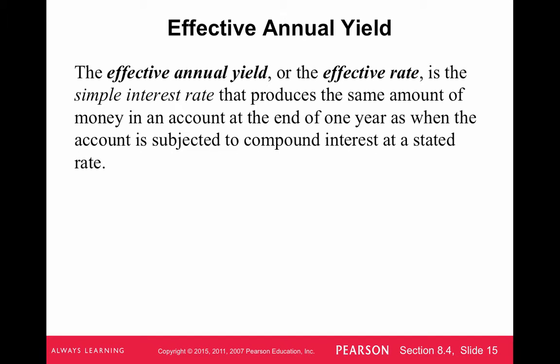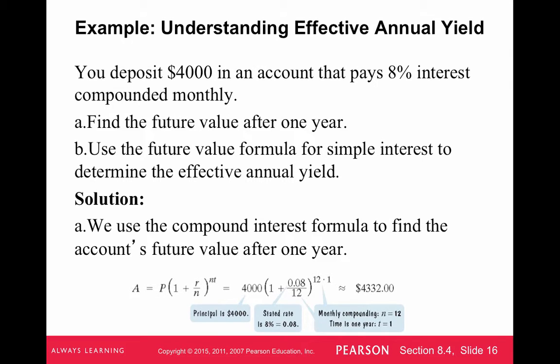The last thing to cover in this section is the effective annual yield. The point here is to show that when you compound interest a certain number of times per year, the more compoundings per year, the more interest you'll accrue. So more compoundings generally means more interest — which is good if you're investing but bad when you're paying a loan.